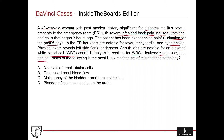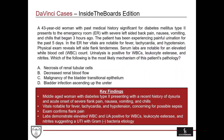This further confirms she most likely has an infection somewhere along the urinary tract. The question is: which of the following is the most likely mechanism of this patient's pathology? The answer choices are: necrosis of renal tubular cells; decreased renal blood flow; malignancy of the bladder transitional epithelium; and bladder infection ascending up the ureter. I'll turn it over to Patrick to give a summary of the case and how to answer the question.